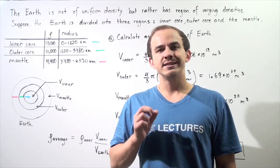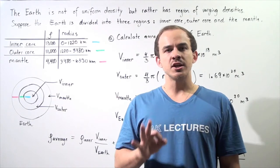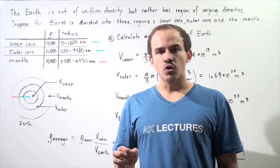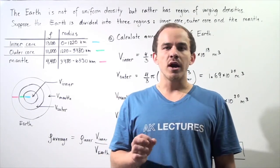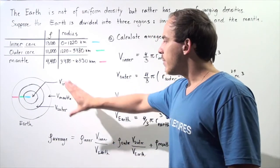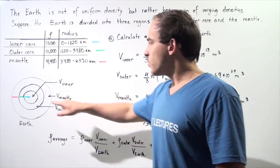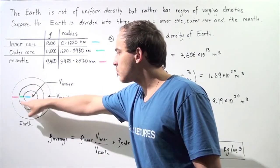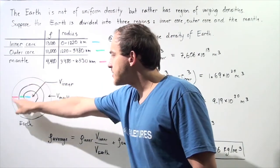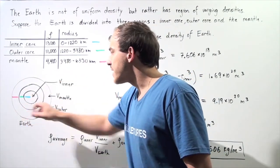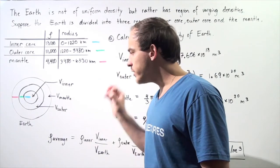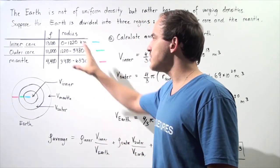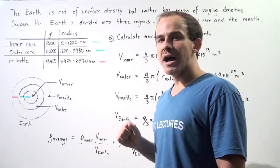Suppose we break down our Earth into three distinct regions. We have the inner core, the outer core, as well as the mantle, as shown by the following diagram. So we have the inner core, this region is the outer core, and this region is our mantle. Each one of these regions has a specific density value, as shown by the table.